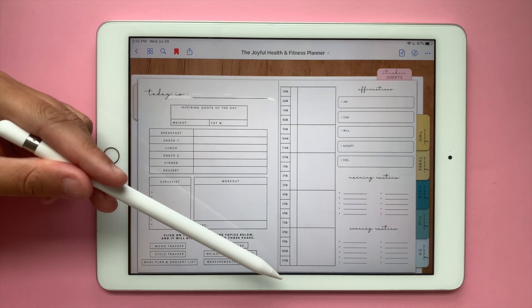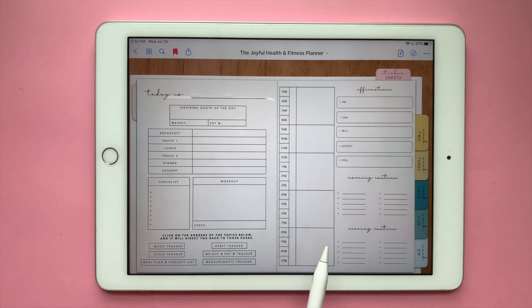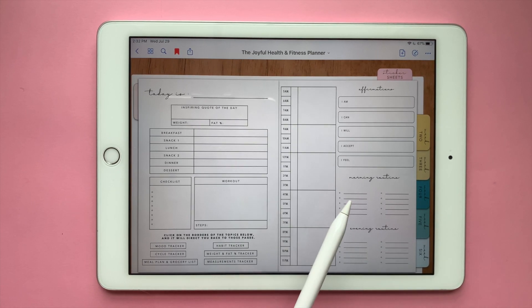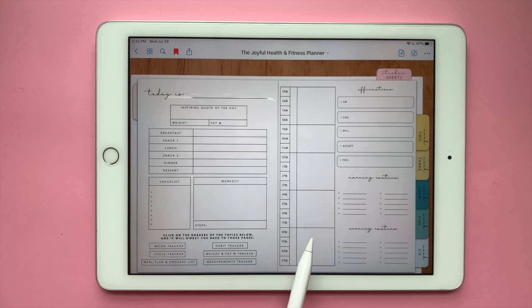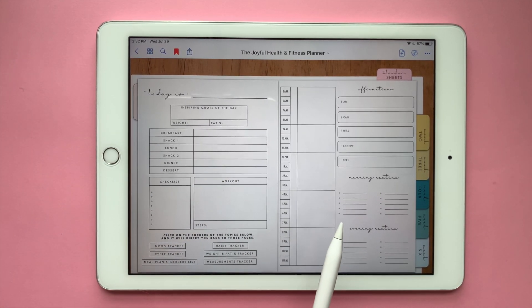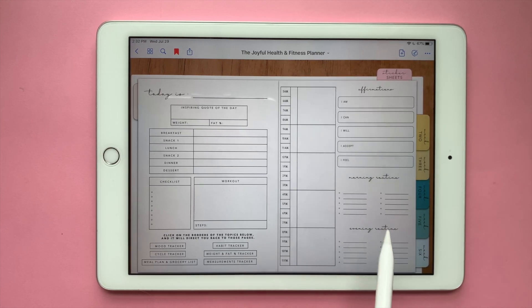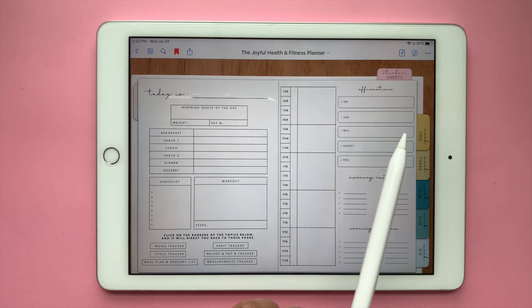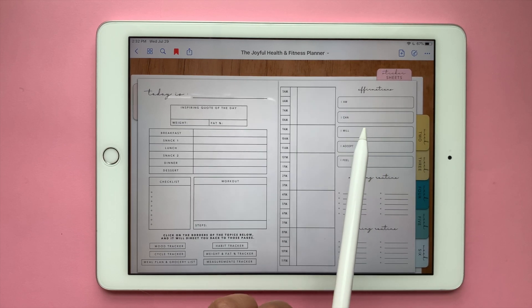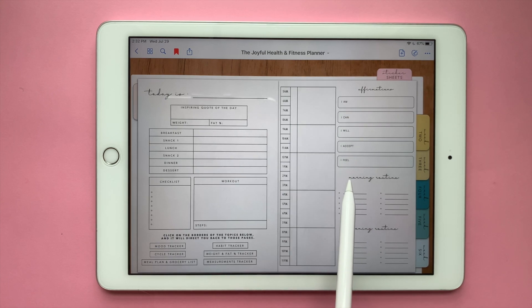On this side, you have a time block schedule planner for you to either use it for your daily tasks or for things regarding your health and fitness. Right here, these three portions, I love it for me, are like my non-negotiables, having affirmations and being able to see them on a daily basis. I helped you out by starting out the first words.